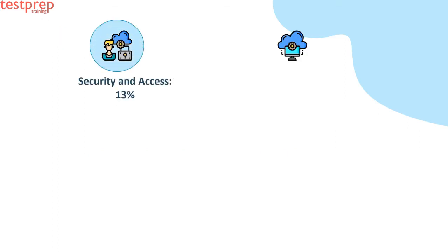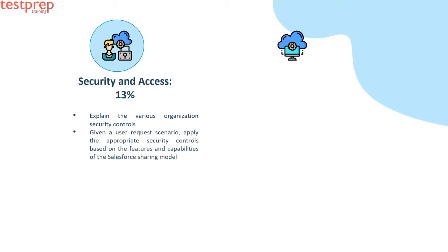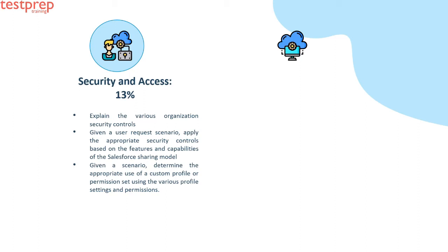Security and Access, 13%: First, explain the various organization security controls — for example, passwords, IP restrictions, identity confirmation, and network settings. Second, given a user request scenario, apply the appropriate security controls based on the Salesforce sharing model — for example, organization-wide defaults, roles and the role hierarchy, manual sharing, sharing rules, and public groups. Third, given a scenario, determine the appropriate use of a custom profile or permission set using various profile settings and permissions. Fourth, describe how folders can be used to organize and secure communication templates, dashboards, and reports.